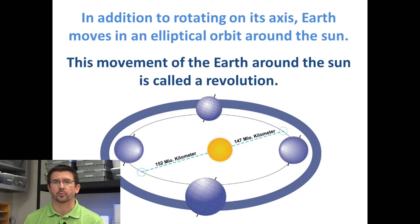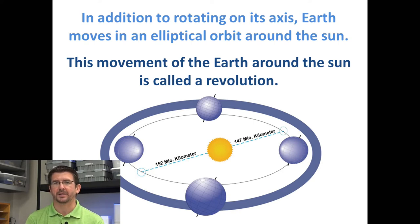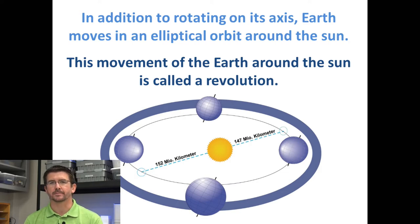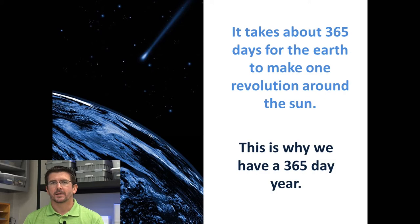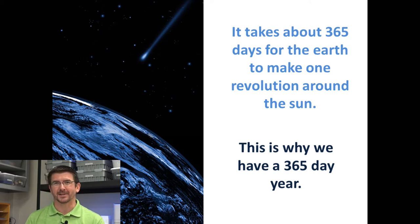Revolve actually means to follow an orbit around something else. For instance, the Earth revolves around the sun. The Earth travels in a path, in an orbit — like you see in the picture there — around the sun. The process of Earth making one complete trip around the sun is called one revolution. The cycle of Earth revolving around the sun is a lot longer than the cycle of day and night because it has a much longer journey to make traveling all the way around the sun.